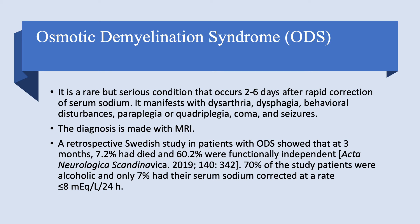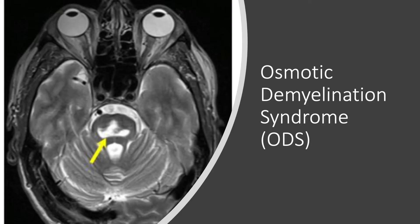This is what osmotic demyelination syndrome looks like on MRI. The yellow arrow points to the pons and you can see this trident picture — the white shape is the demyelination. Again, it doesn't have to be in the pons; it can happen in other areas. But this is how you make the diagnosis on MRI of the brain.